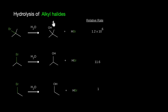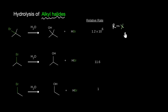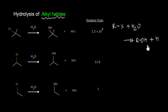What I have here is the hydrolysis reaction of a few alkyl halides. An alkyl halide is nothing but a hydrocarbon to which a halogen is attached. If we add water to an alkyl halide — where X can be fluorine, chlorine, bromine, or iodine — we get ROH, which is an alcohol, and we're left with an HX molecule.